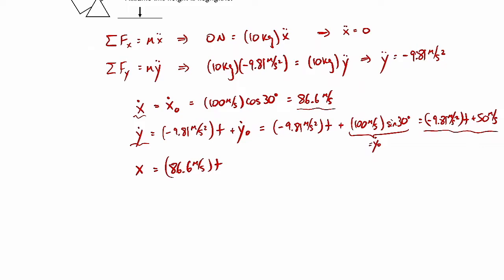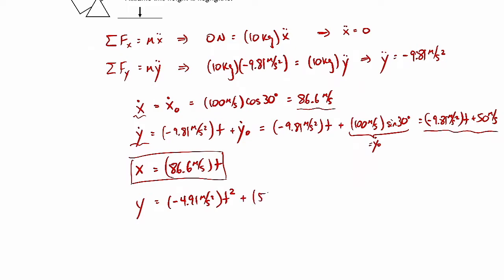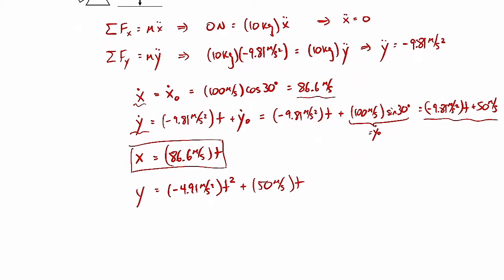Integrating the y velocity equation gives the y position: y = −½ × 9.81 × t² + 50t + y₀. Since y₀ = 0, we have y = −4.91t² + 50t. That's the trajectory of the cannonball as a function of time.